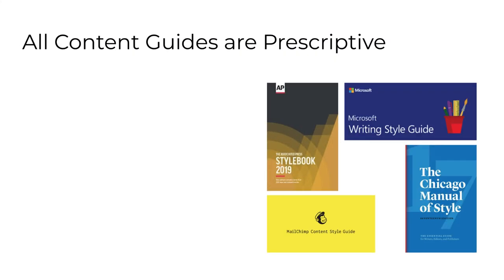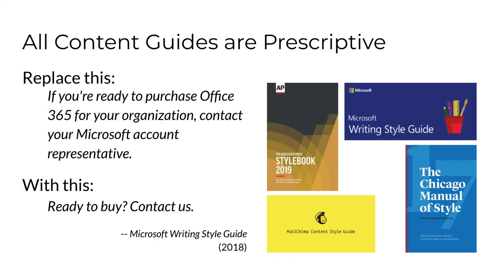All content guides, whether they focus on style or voice or something else, are prescriptive. They list the standards that writers should follow. Here's a prescription from the Microsoft Writing Style Guide. For Microsoft, in their style, the first version is wrong and the second version is right. You're learning there are a multitude of guides for different types of content in different contexts. That means there is no single correct style for anything. This is difficult for many to accept — there is no single correct writing style.